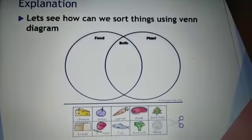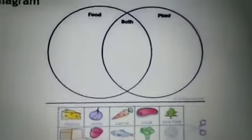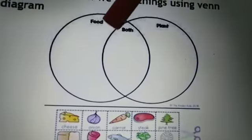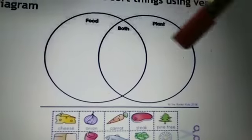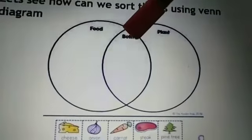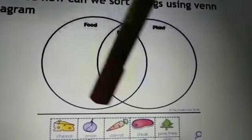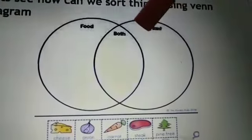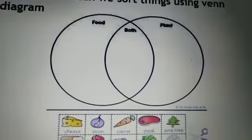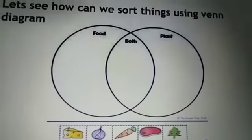Now let's see how we can sort things using a Venn diagram. In this example we have two circles: circle A for food and circle B for plants. The overlap between the two circles means both. So any object in this part of the Venn diagram is food only, any object in this part is a plant only, and any object in the overlap is both plant and food.